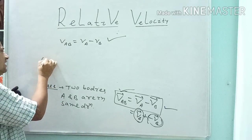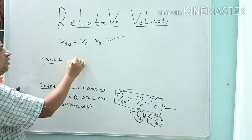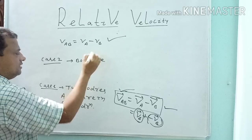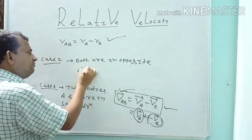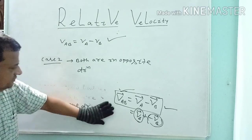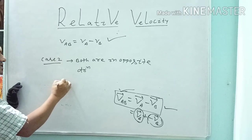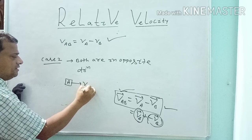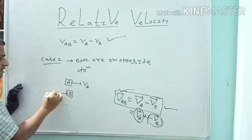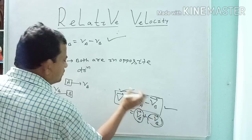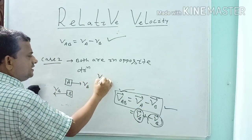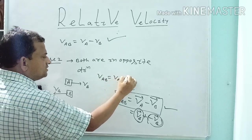For Case 2, both are in opposite direction. Suppose here is body A moving with velocity VA, and here is body B moving with velocity VB. What is the relative velocity of A with respect to B? Since they are in opposite direction, one can write VAB = VA + VB.